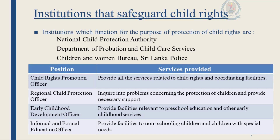There are three main institutions for this task. The first is the National Child Protection Authority. The second is the Department of Probation and Child Care Services. The third institution is the Children and Women's Bureau, which is part of the Sri Lankan Police. These institutions exist for the protection of child rights, saving children, and providing necessary support and guidance to them.